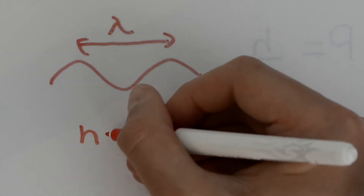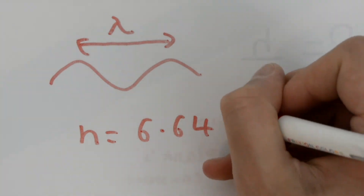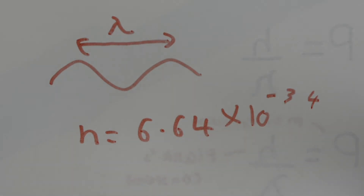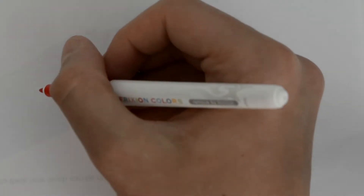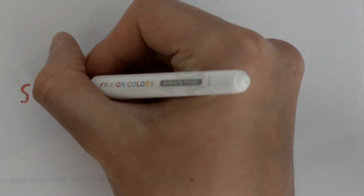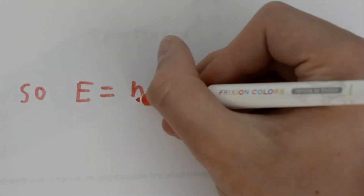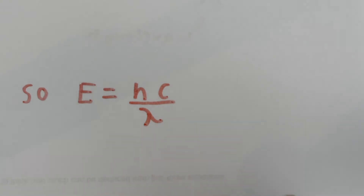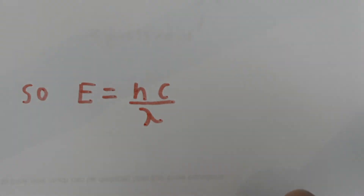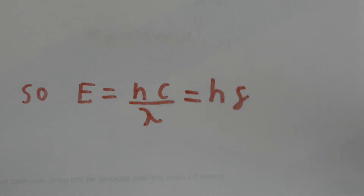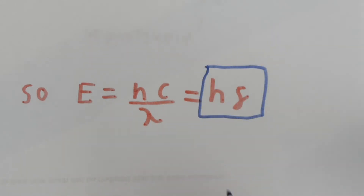Planck's constant is a kind of magical number that describes the relationship between energy and frequency. So on a quantum level, the momentum of a particle has nothing to do with its mass, but its wavelength. The energy of a photon, or a massless particle, equals Planck's constant times the speed of light divided by the wavelength. And since frequency equals the speed of light over wavelength, we get E equals hf — the energy of a photon equals Planck's constant times its frequency.